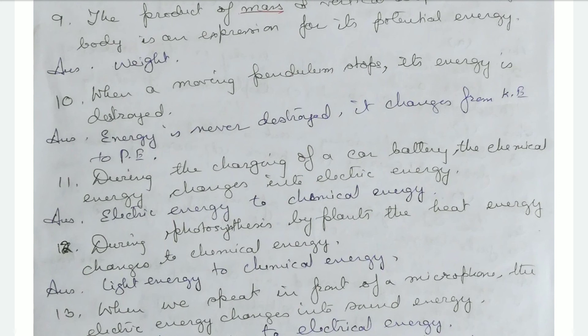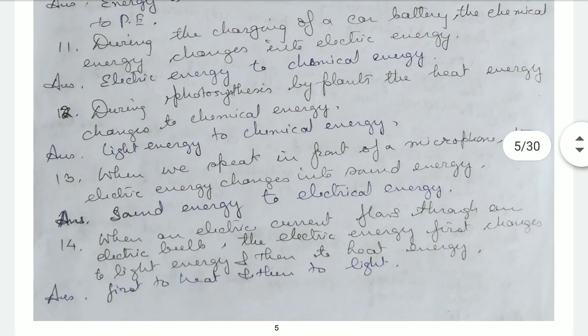During photosynthesis by plants, heat energy changes to chemical energy — correction: it is light energy that changes to chemical energy, i.e., solar light energy changes into chemical energy. When we speak in front of a microphone, electrical energy changes into sound energy — correction: that is the reverse. Sound energy changes to electrical energy.